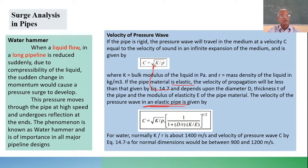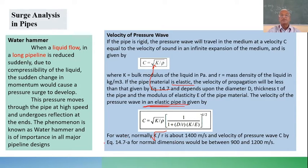For water, the value of √(K/ρ) is about 1400 m/s. The pressure wave velocity c from the elastic pipe equation, for normal pipe dimensions, would typically be between 900 to 1200 m/s.